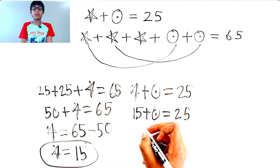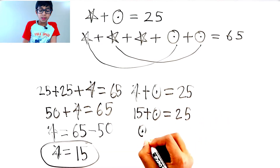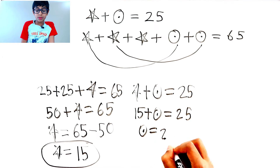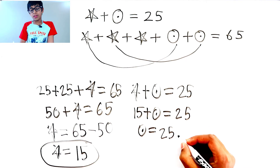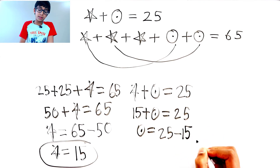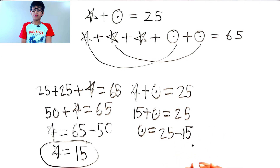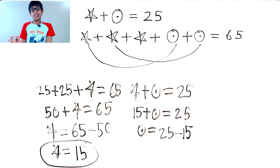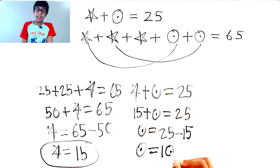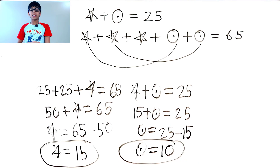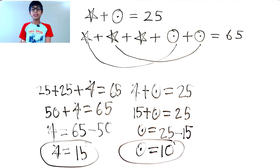This is a plus 15, so let's move it to the other side. Circle equals 25 minus 15. 25 minus 15 is 10. So circle equals 10. The answer is: star equals 15 and circle equals 10. Let's keep doing more math every day — we upload videos every day!